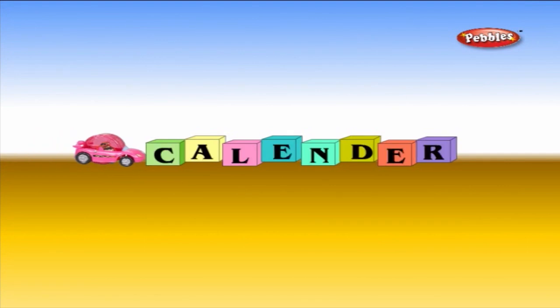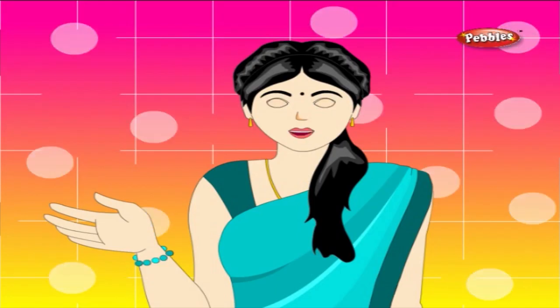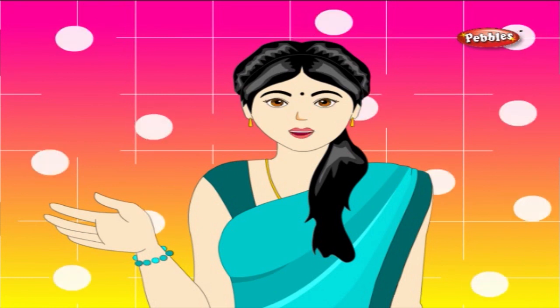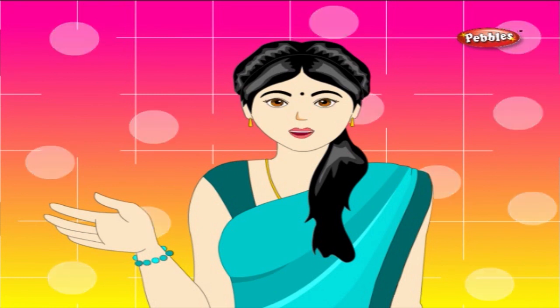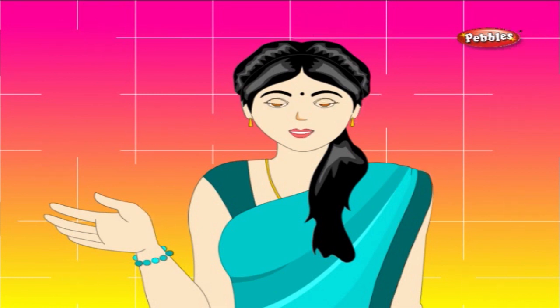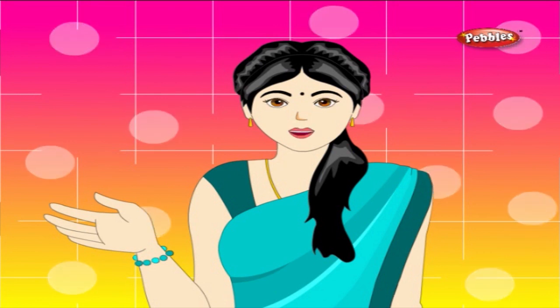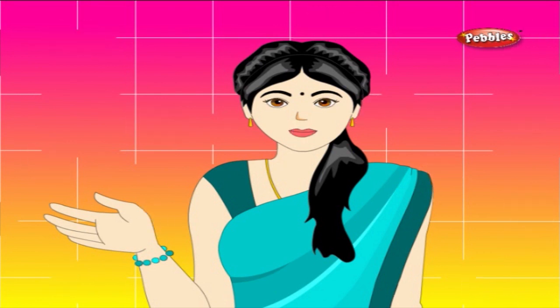Calendar. We use the calendar to see the dates, days and months of a year. We have 12 months in a year.